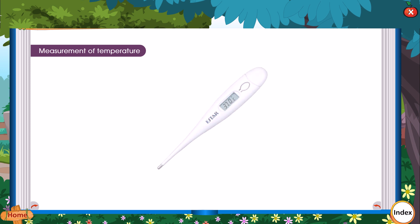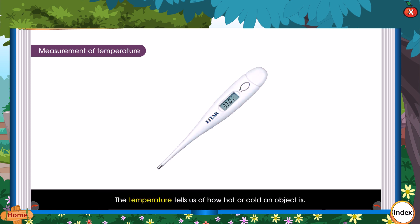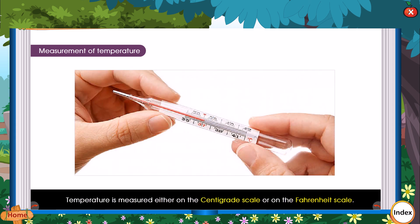The temperature tells us how hot or cold an object is. A thermometer is used to measure temperature. Temperature is measured either on the centigrade scale or on the Fahrenheit scale.